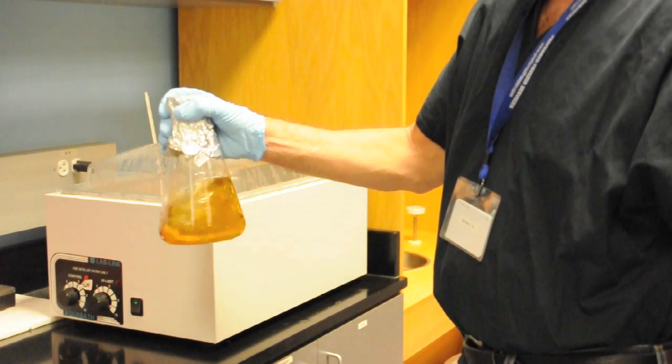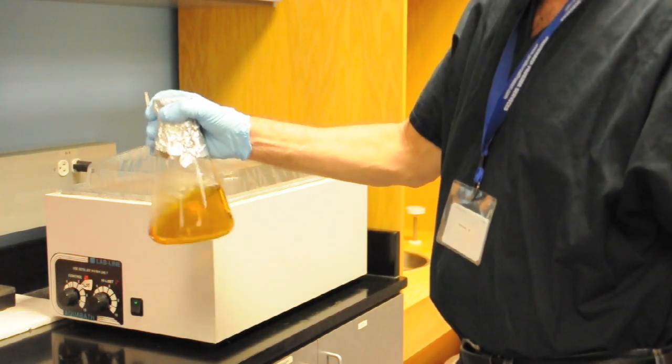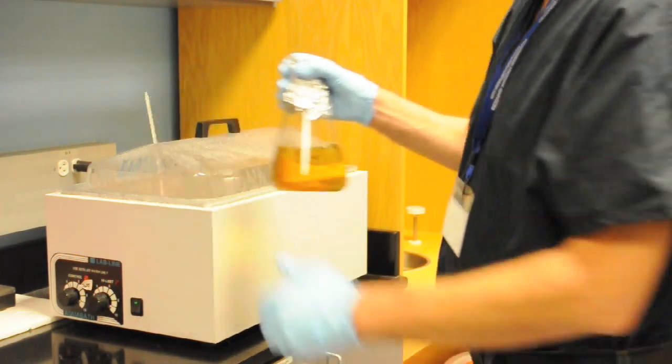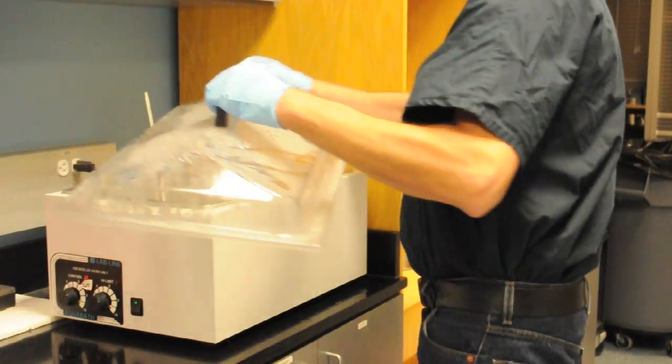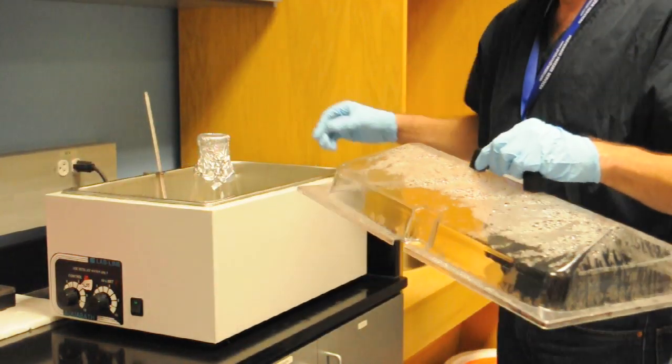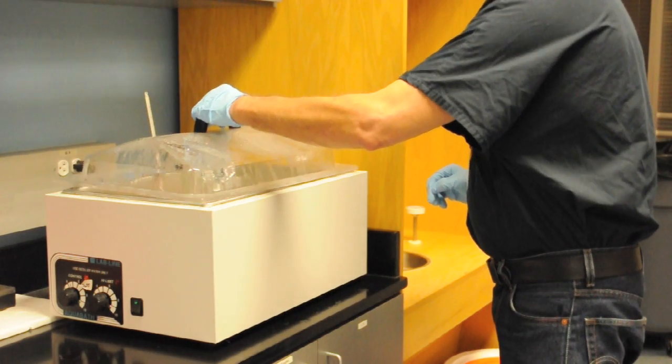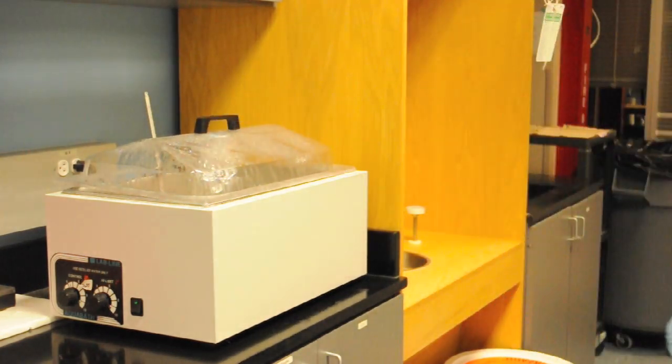Once the media is completely sterilized, we want to shake it a little bit to make sure it's homogeneous. It can settle out a little bit in the autoclave. And we're going to set it into our warmed water bath, in this case set for about 65 degrees.